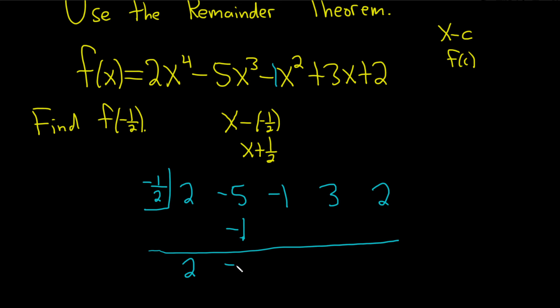You add the negative 5 and the negative 1 to get negative 6. Then you do it again. Negative 6 times negative 1 half is positive 3. You add and get 2. 2 times negative 1 half is negative 1. You add and get 2. Really nice. 2 times negative 1 half is negative 1. You add and get 1.